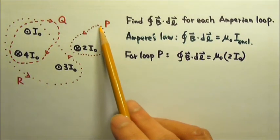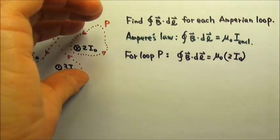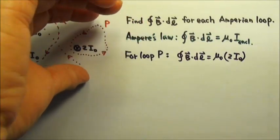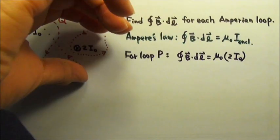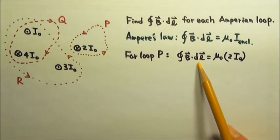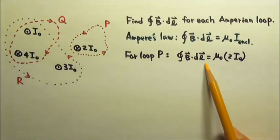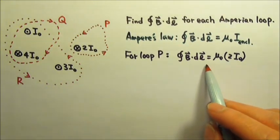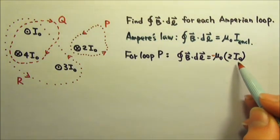Loop P goes counterclockwise. But if I use my thumb to follow the direction of the enclosed current, we can see that my curved four fingers indicate the magnetic field lines to be clockwise. This means B and dl are sort of in opposite directions. When two vectors are sort of in opposite directions, their dot product is negative. Therefore, this integral equals negative μ₀ times 2I₀.